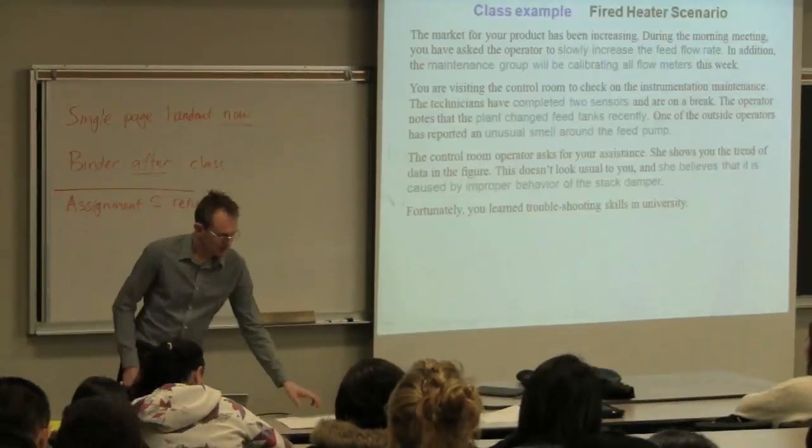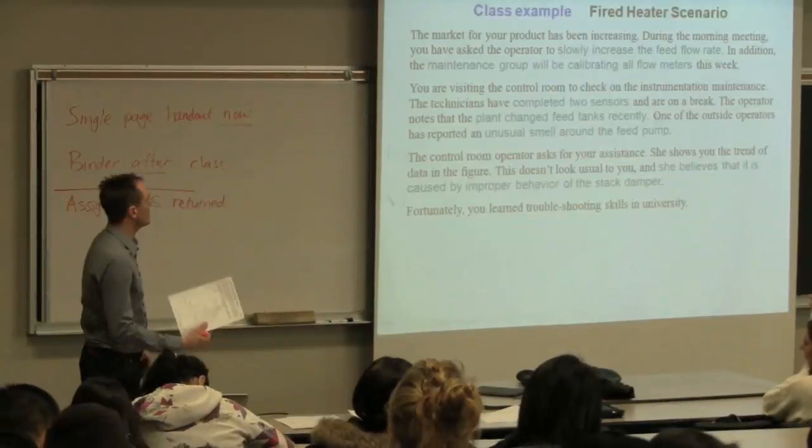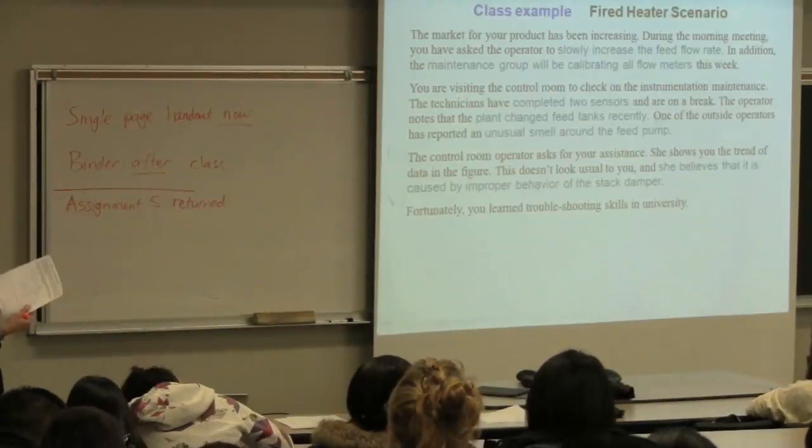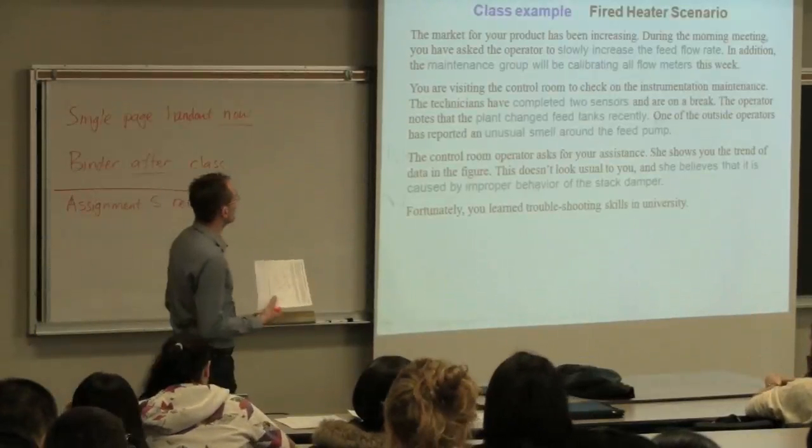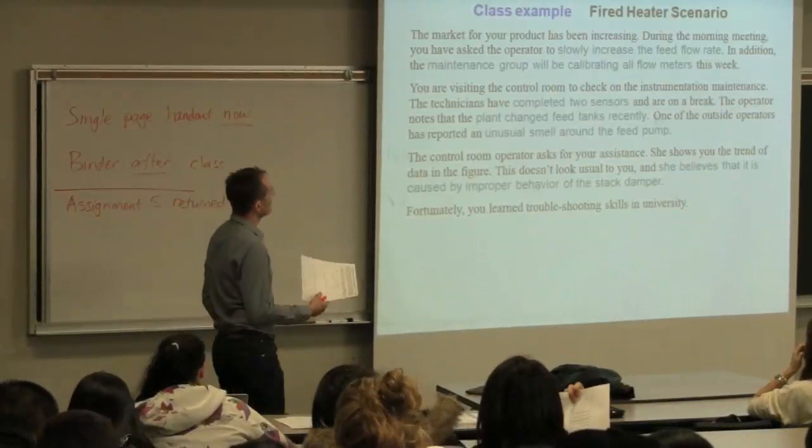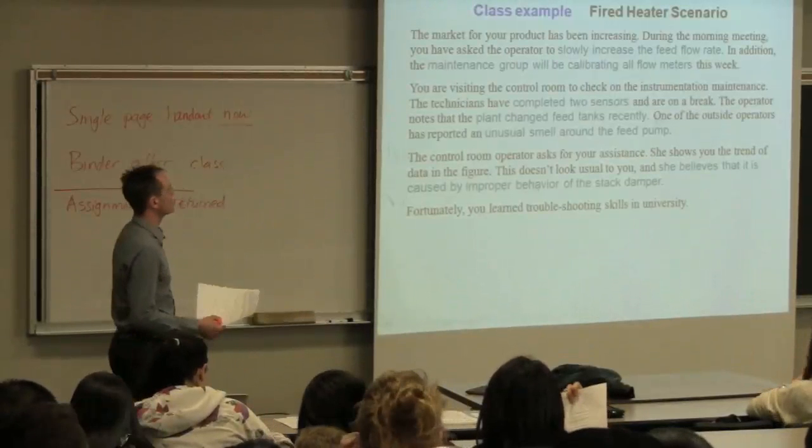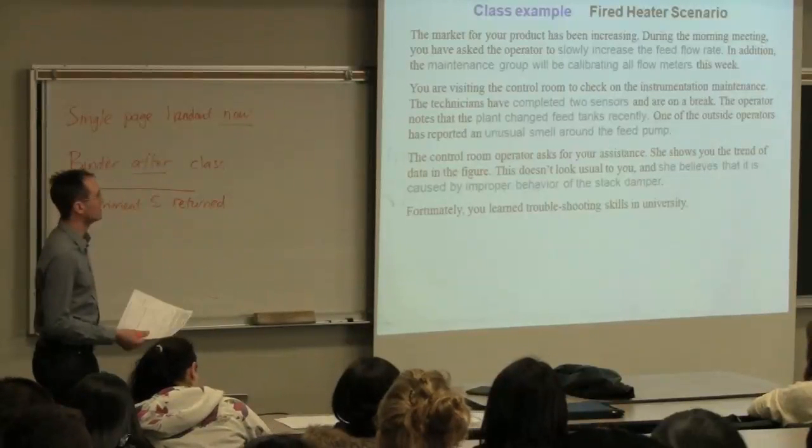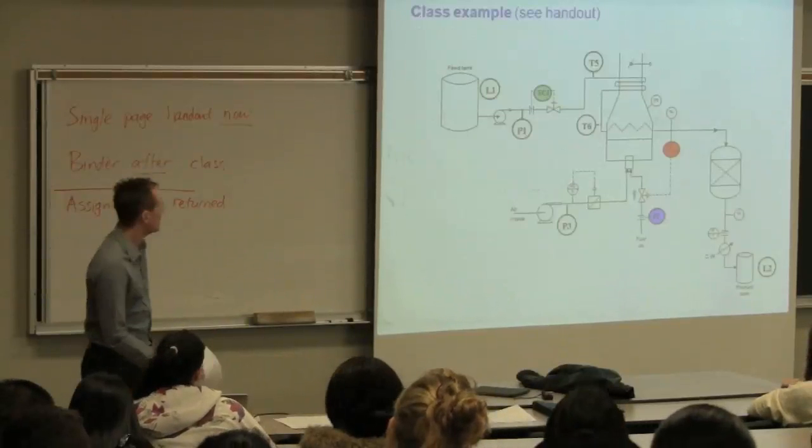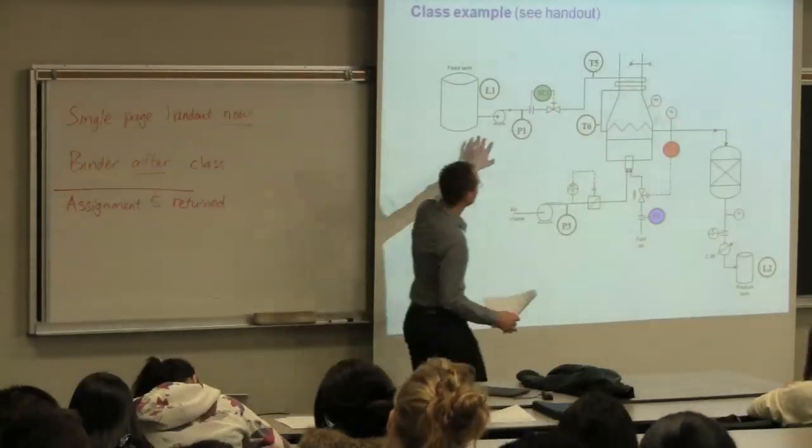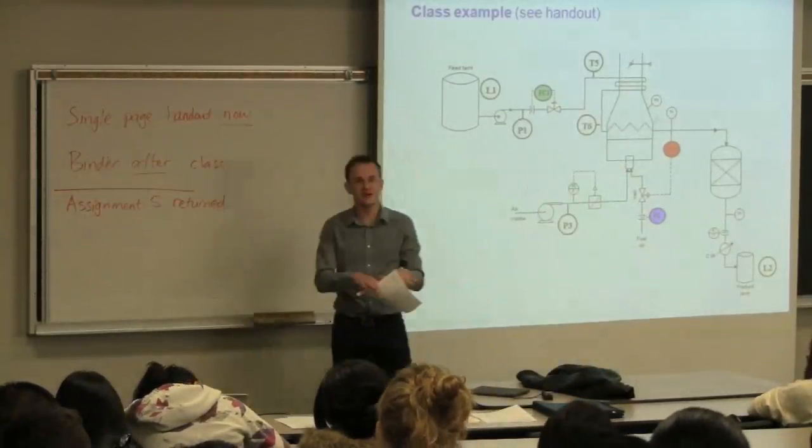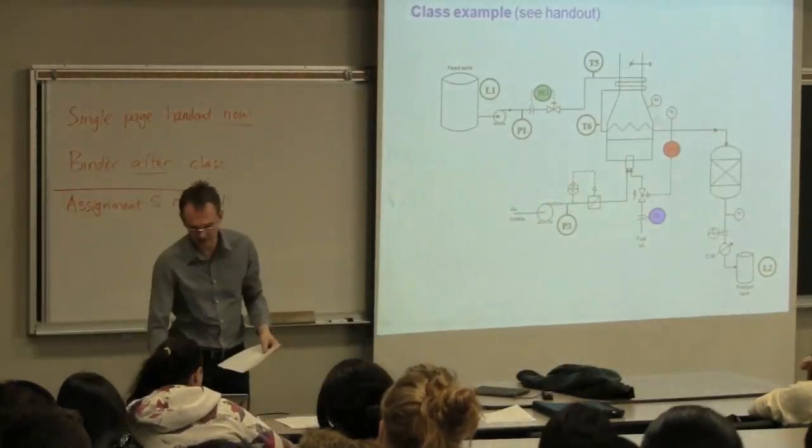In the instructions, these are printed on the sheet in front of you, but there's some information that's not being given. Let's take the first instance: the market for your product has been increasing, so you've decided to increase the flow rate, the throughput of this process. You're taking it from whatever the base case is and shifting it up to a higher level.